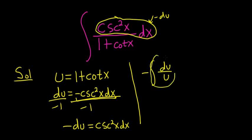So this here becomes a natural log. This is negative natural log absolute value of u plus c.